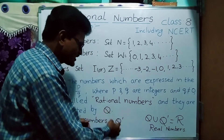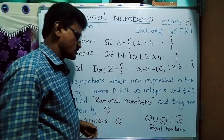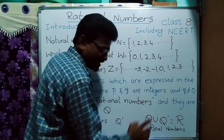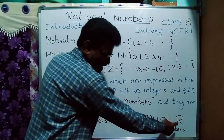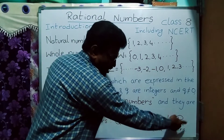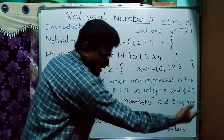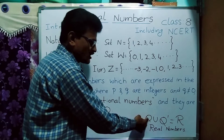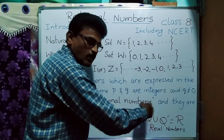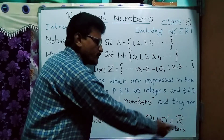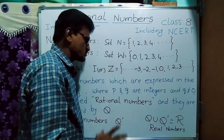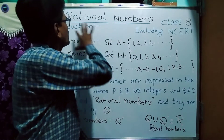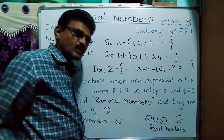Rational numbers and irrational numbers together — Q union Q dash — is said to be R, which means real numbers. So rational numbers and irrational numbers combined are called real numbers. Now we will discuss all about rational numbers.